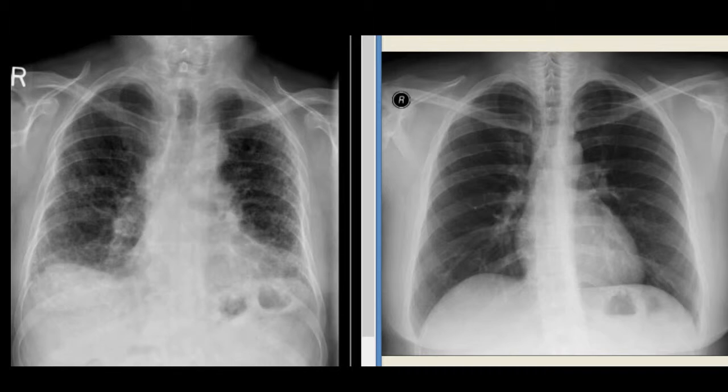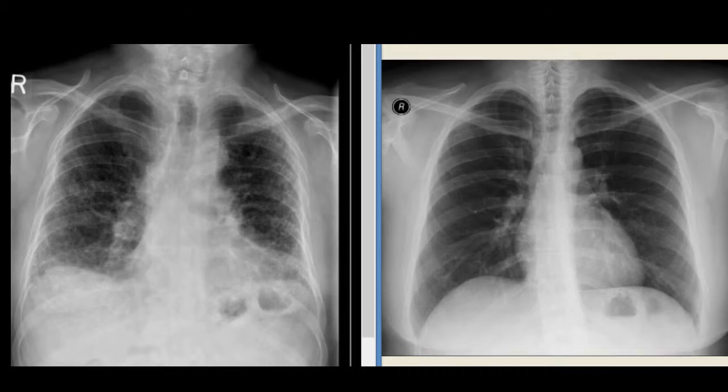There is no pleural thickening on the periphery. Right and left main bronchi seem to be tapering gradually as they enter into the lungs. There is no pleural effusion on either side, as the costophrenic angles are clearly visible.